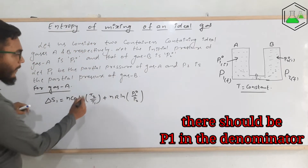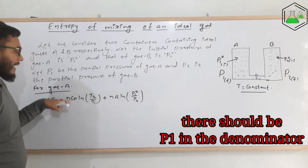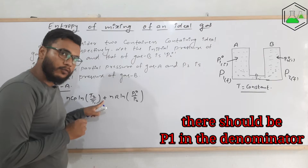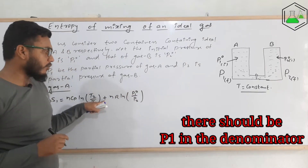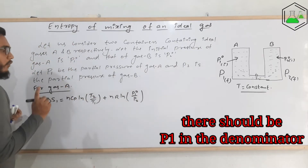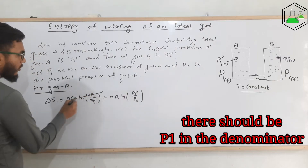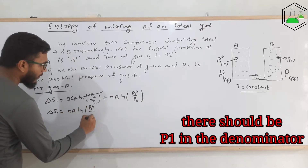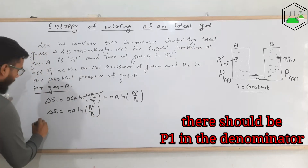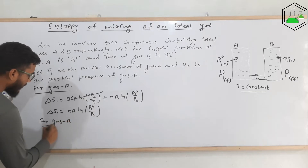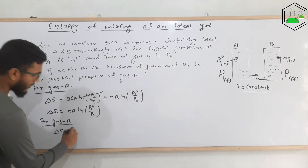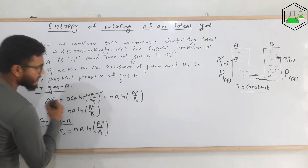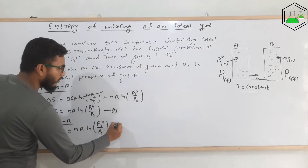To remember the formula: ΔS = n·Cp·ln(final temperature / initial temperature) + n·R·ln(initial pressure / final pressure). Since we are at constant temperature, the temperature term is zero, so ΔS₁ = n₁·R·ln(p1 naught / p1). Similarly for gas B, the change in entropy ΔS₂ = n₂·R·ln(p2 naught / p2). Let us call these equation 1 and equation 2.